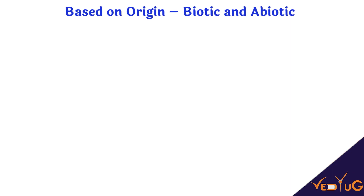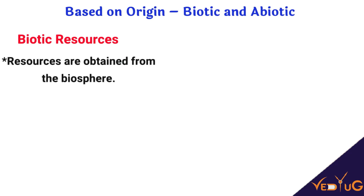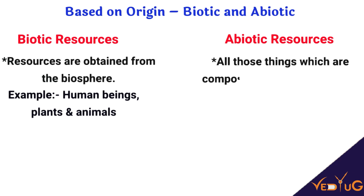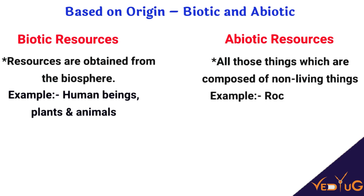On the basis of origin, there are two types of resources: biotic resources and abiotic resources. Biotic resources are obtained from the living world and they have life — human beings, flora and fauna, and fisheries are some examples. Abiotic resources are composed of non-living things and they don't have life, such as rocks, minerals, and metals.